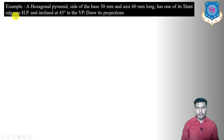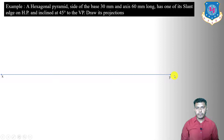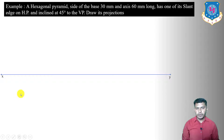The pyramid has one of its slant edges on HP, so it is resting on the horizontal plane. To derive the first stage, we assume the base is parallel to HP and perpendicular to VP, and the axis is parallel to VP and perpendicular to HP. First, draw the XY reference line. We are using the first angle projection method, so the top view is below and the front view is above the XY reference line.